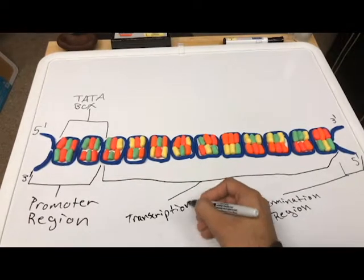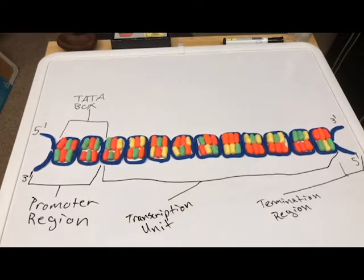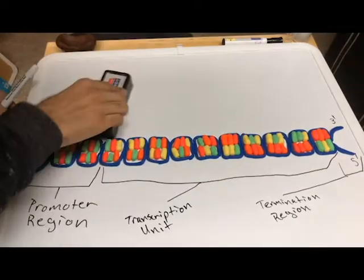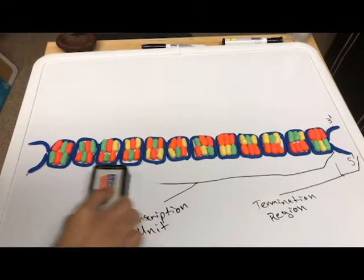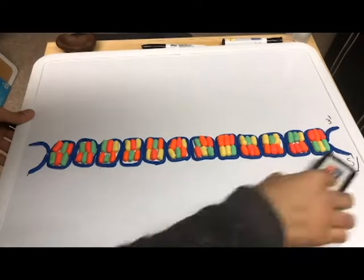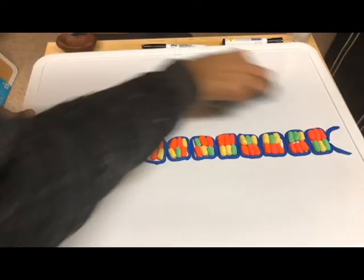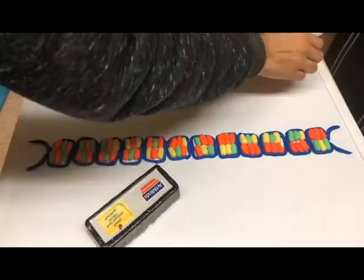The nucleotide bases are adenine, thymine, cytosine, and guanine. A always pairs with T, and that's the base pairing rule. C always pairs with G, and that's the way they go.